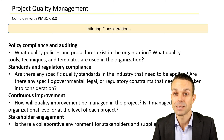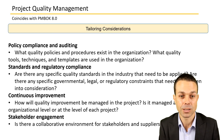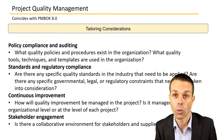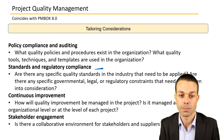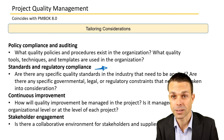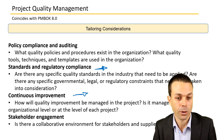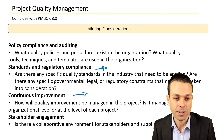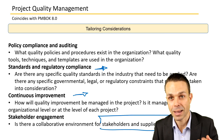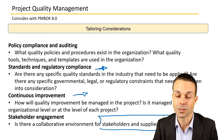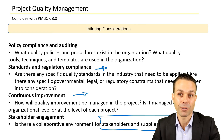Tailoring considerations include policy compliance and auditing — existing policies and procedures in the organization may include auditing your project process. Standards and regulatory compliance is becoming increasingly prominent with more regulation around the world. Continuous improvement means improving processes within the project. Stakeholder engagement asks whether there is a collaborative environment for stakeholders and suppliers to give feedback — are people afraid to call out mistakes, or is it a free environment where mistakes can be surfaced and fixed quickly?